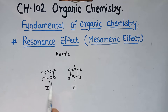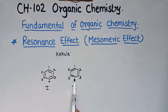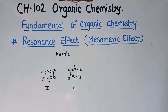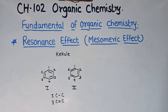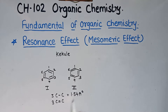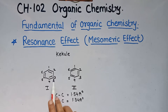What is the difference between these two structures? The carbon-carbon double bond is present at positions 1-2, 3-4, and 5-6 in the first structure, while in the second it is at 2-3, 4-5, and 6-1. According to Kekulé, these two structures show 2 types of bond length: carbon-carbon single bond length is 1.54 Å, while carbon-carbon double bond length is 1.34 Å.